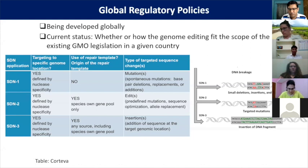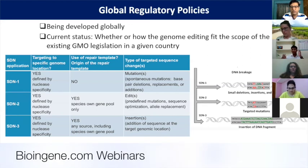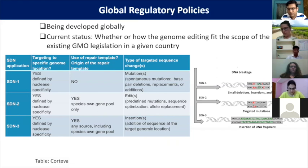SDN3 is when you are knocking in a large fragment of a gene — that is called SDN3. If you are changing just a few base pairs using a donor template, then it is SDN2. Mostly SDN3 is regarded as a GMO by most regulatory bodies around the world.